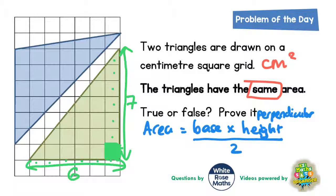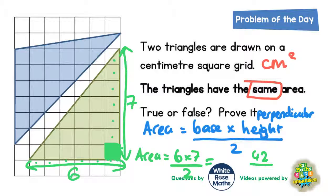For the green triangle, to find the area we need to do six times seven and then divide by two. Six times seven is 42, and 42 divided by 2 is 21 centimeters squared. So the area of the green triangle is 21 centimeters squared.